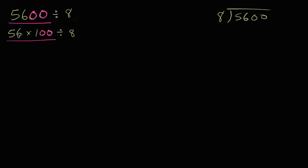And when you write it this way, then you might say, hey, well, instead of doing 56 times 100 divided by 8, I can switch the order. This is going to be the same thing as 56 divided by 8, divided by 8 times 100. Times 100. Now why did I do this?